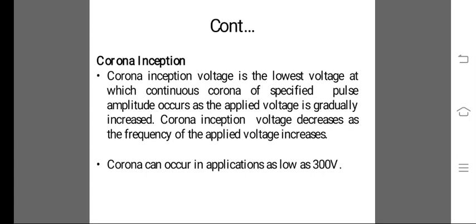Corona Inception. Corona Inception voltage is the lowest voltage at which continuous corona of specified pulse amplitude occurs. As the applied voltage is gradually increased, Corona Inception voltage decreases as the frequency of the applied voltage increases. Corona can occur in applications as low as 300 volts.